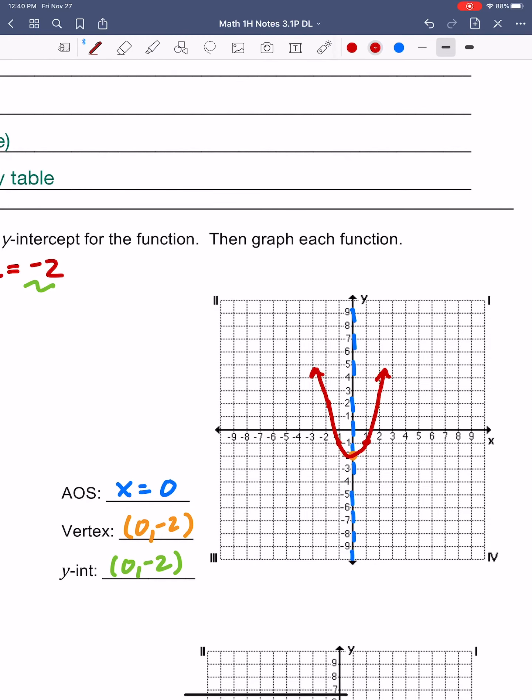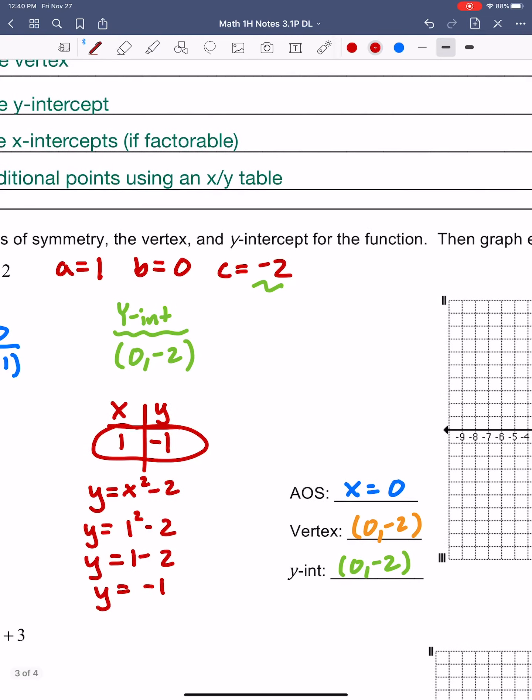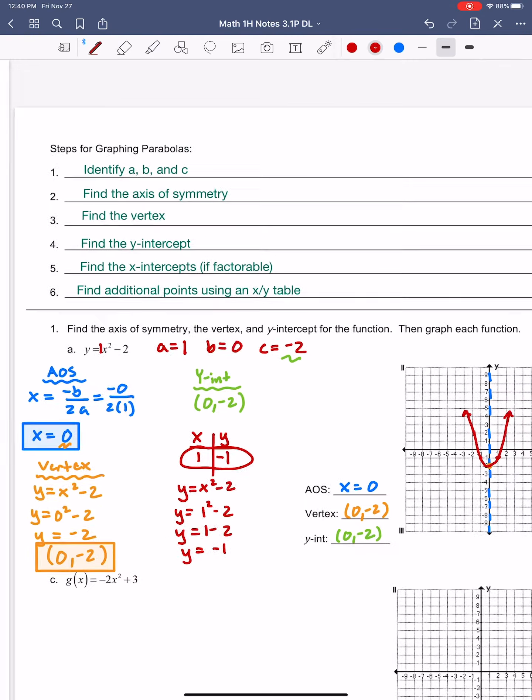Okay, it hits those points and goes upwards, right? We know it's going up because A is positive, so it's going to be facing up. Let's go through one more here.